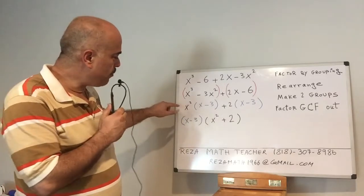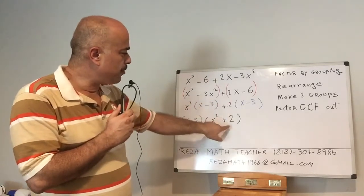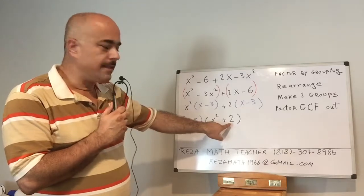So the leftover would be (x² + 2), which goes as the second factor.